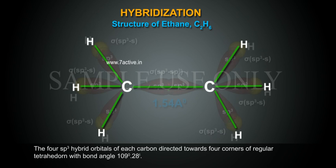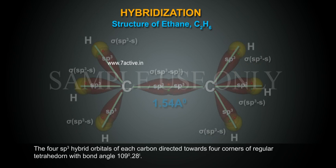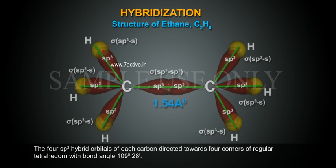The 4 sp3 hybrid orbitals of each carbon directed towards four corners of regular tetrahedral with bond angle 109 degree 28 minute.